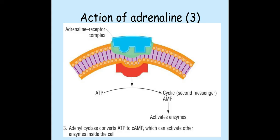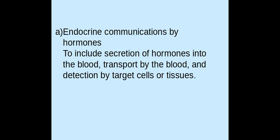Depending upon what that cell is or where it's located, cyclic AMP will have different impacts upon the cell. So that is how adrenaline — an example of a peptide hormone — triggers a response inside the cell using the first messenger and second messenger model. That is endocrine communication using hormones. Good luck with your exams.